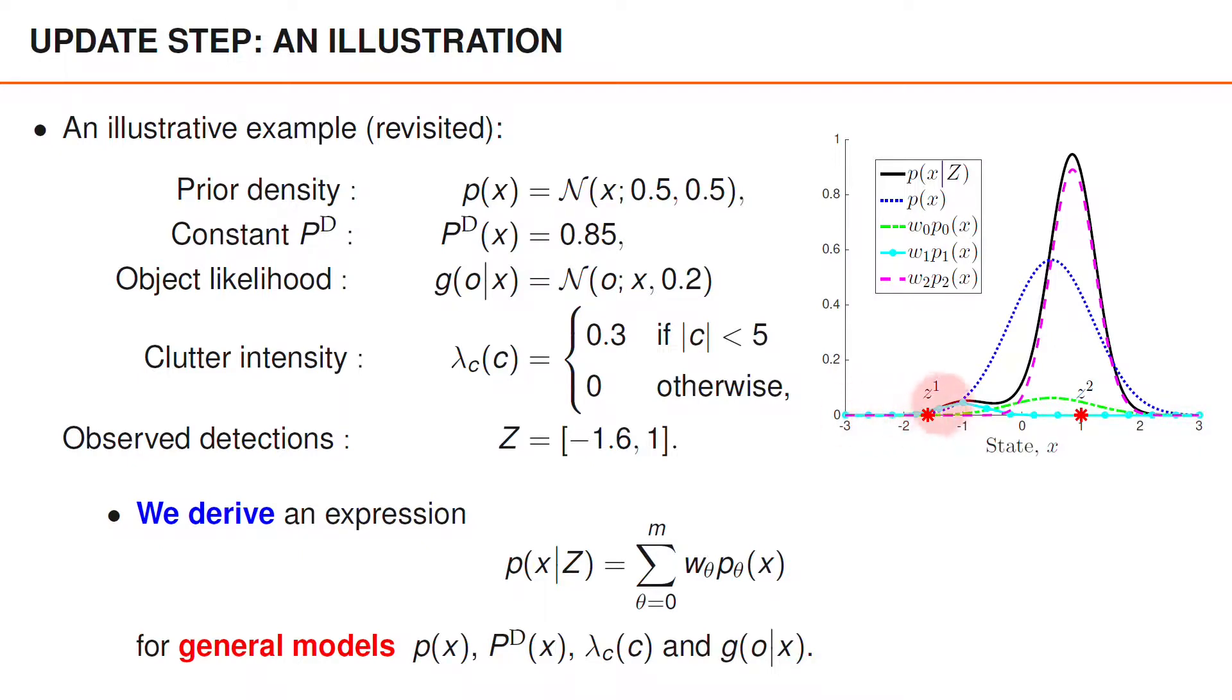Finally, the posterior is the sum of these three functions, illustrated by a solid black curve. In this video, we derive detailed expressions for W_θ and P_θ(x) for general functions p(x), P^D(x), λ_c(c), and the object likelihood g(o|x).